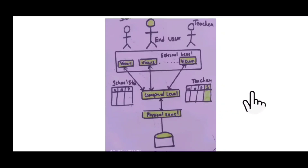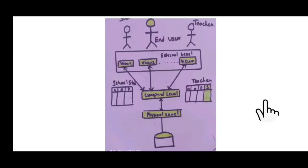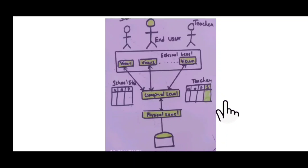For example, if you make changes in the database location, that is a change at the physical level. If you change the database location, you don't have to do any alteration in the tables. That's physical data independence.